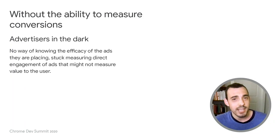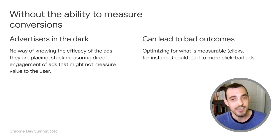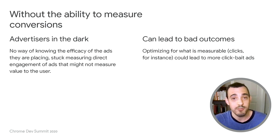Without it, advertisers and publishers are completely in the dark, and it could even lead to perverse incentives where ads optimize for clicks rather than actually providing value to the people who click on them. The Privacy Sandbox is a project about making the web more private by default while still supporting critical use cases like conversion measurement, and we're committed to making this use case possible.